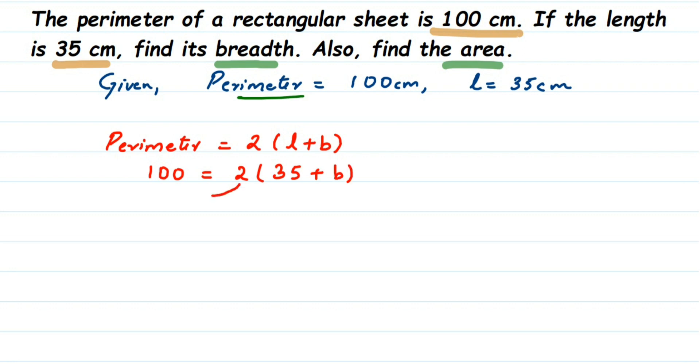Now we want only B value. First I'm going to send this 2 to the other side. There are two ways: one is you can open the bracket - multiply 2 with 35 and 2 with B - or you can send the 2 to the other side of the equation in the first step itself.